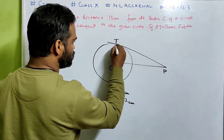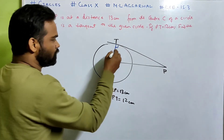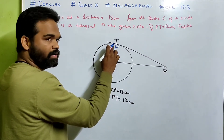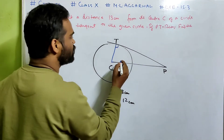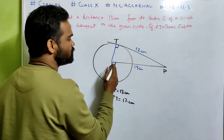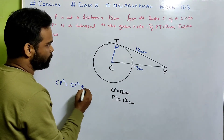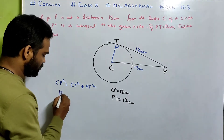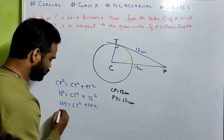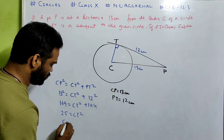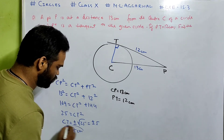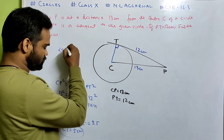By Pythagoras theorem, we join CT — that becomes the radius, perpendicular to the tangent. So: CP² = CT² + PT². Substituting: 13² = CT² + 12², so 169 = CT² + 144, meaning CT² = 169 − 144 = 25. Therefore CT = ±√25 = ±5. We take the positive value only, so the radius is 5 centimeters.